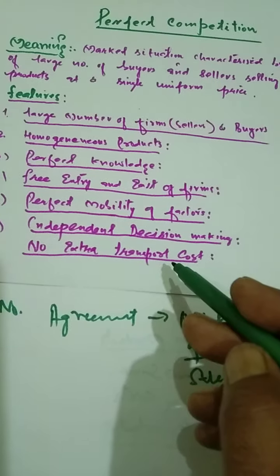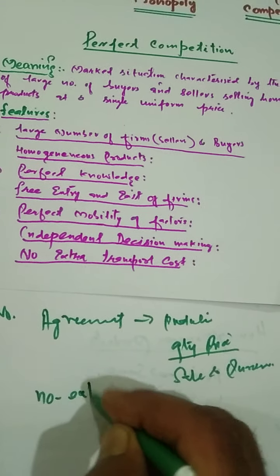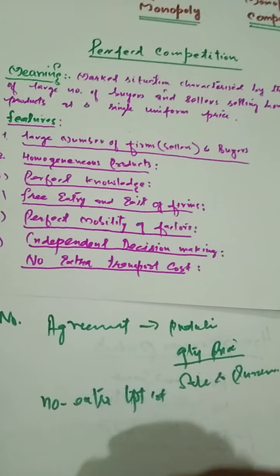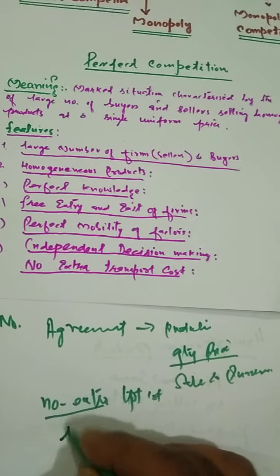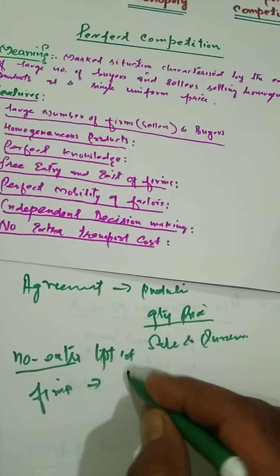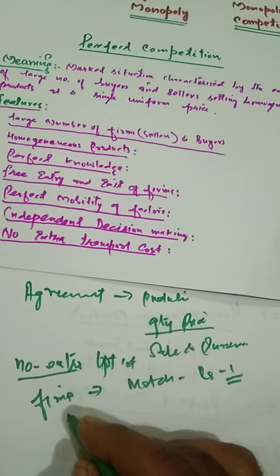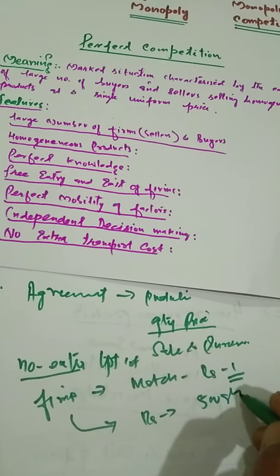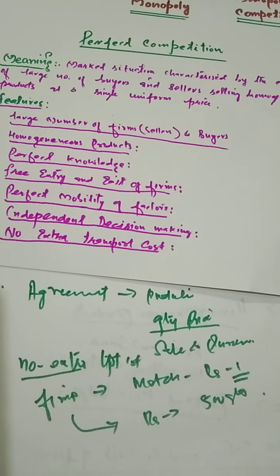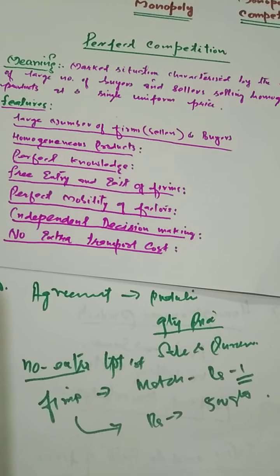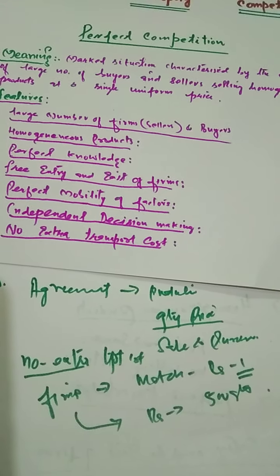Another important feature is no extra transport costs. For one price to prevail throughout the market, it is essential that there should be no extra transportation costs for the consumer when buying a commodity from different sellers. For example, a matchbox costing 1 rupee at the firm gate should cost the same 500 kilometers away from the firm. So there are no extra transportation costs regardless of location.